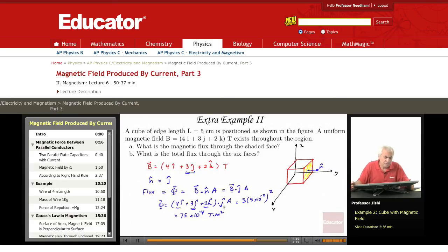What is the total flux through the surface, through the six faces? It equals zero right away. Why is that? Because the magnetic flux through any closed surface is zero.